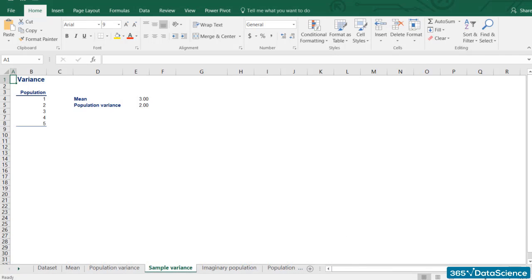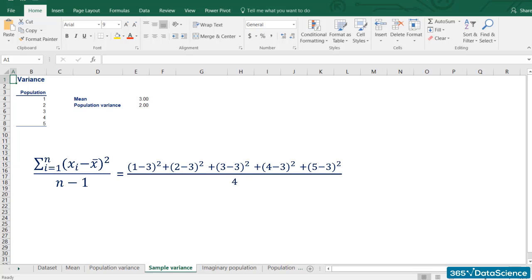The sample mean is once again 3. The numerator is the same but the denominator is going to be 4 instead of 5, giving us a sample variance of 2.5.